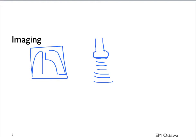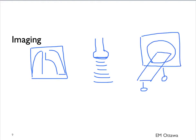As discussed before, our imaging choices can include x-ray, ultrasound — bedside or formal — or CT scan. The choice of imaging will depend on what we think the problem is and how stable the patient is. An unstable patient should not be leaving the emergency department until they are more stable. For an unstable patient, they might be able to have a portable x-ray in their bed and a bedside ultrasound. For patients who are stable, they will be able to leave the emergency department to get a formal ultrasound or a CT scan.